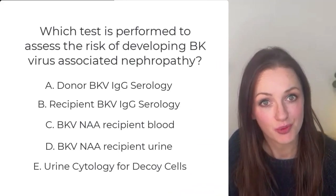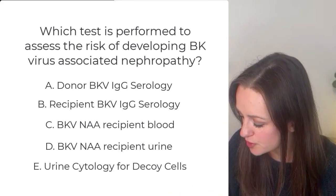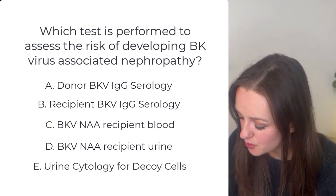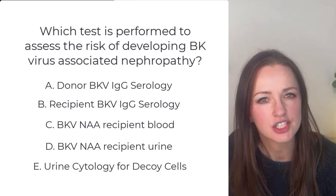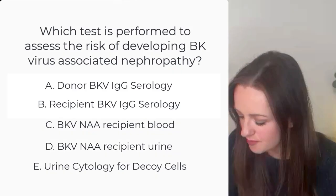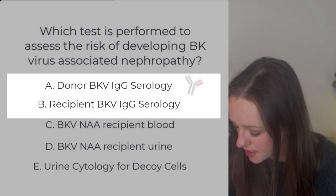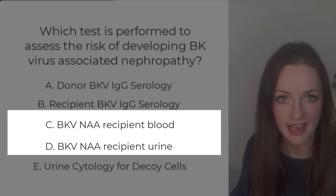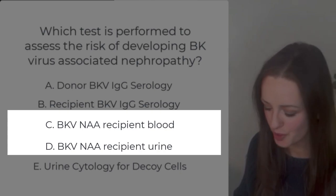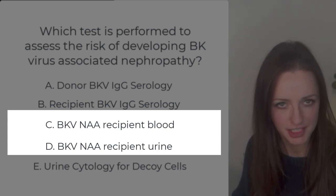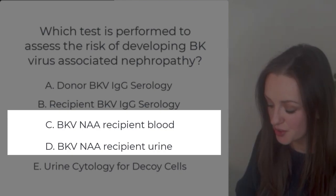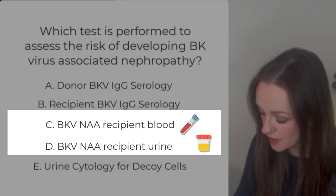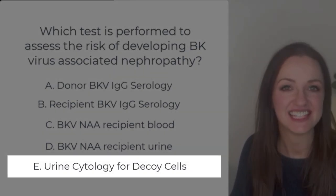This was one of the MCQs that one of the students brought along to the session: Which test is performed to assess the risk of developing BK virus-associated nephropathy in transplant recipients? Is it BK serology in the donor or recipient? Is it the BK virus NAA — nucleic acid amplification, i.e. PCR? Is it the BK virus in the recipient blood? Is it the BK virus in the recipient urine? Or is it urine cytology to look for decoy cells?